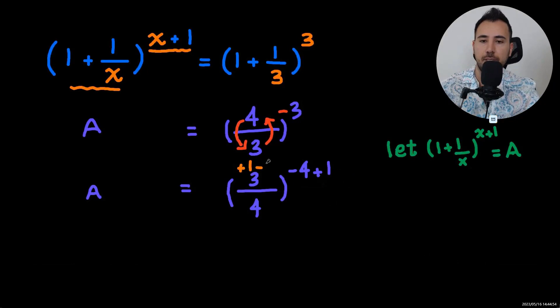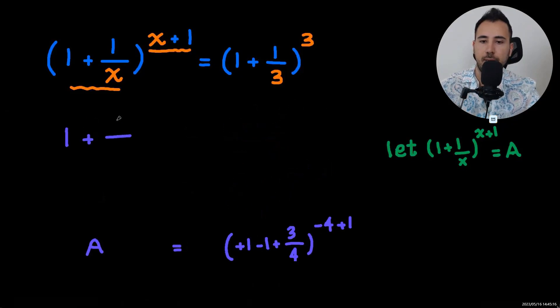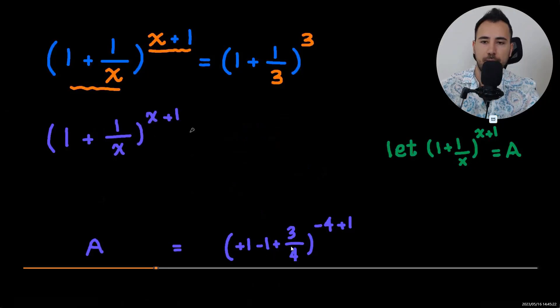So we're going to do the same thing, so this three over four should be the same as this. To do that we're going to add and minus one. So minus one plus three over four is negative one over four.